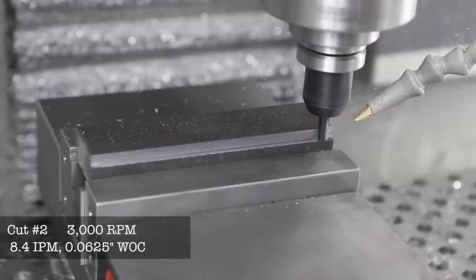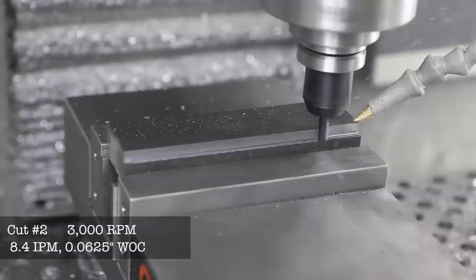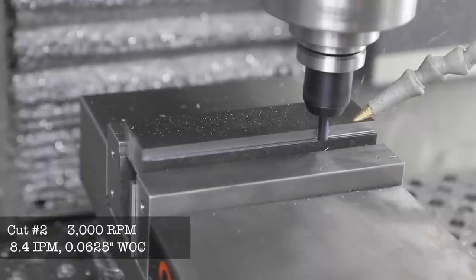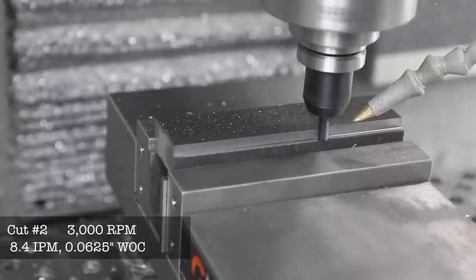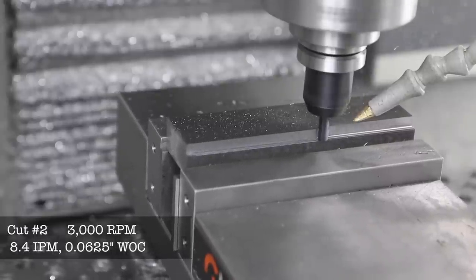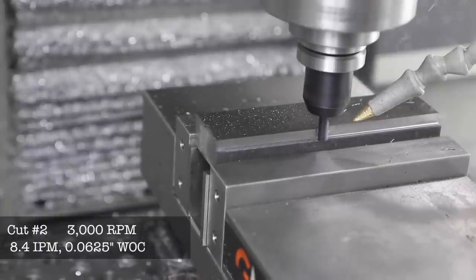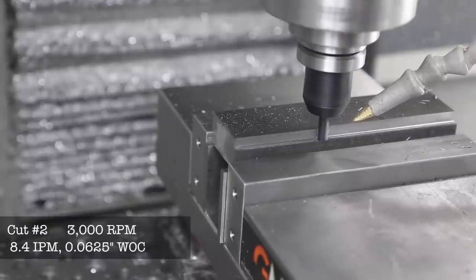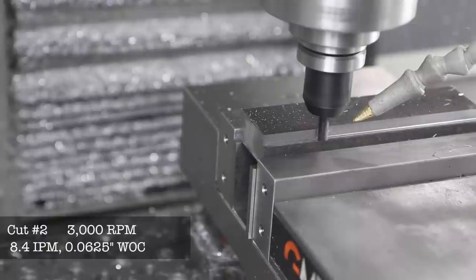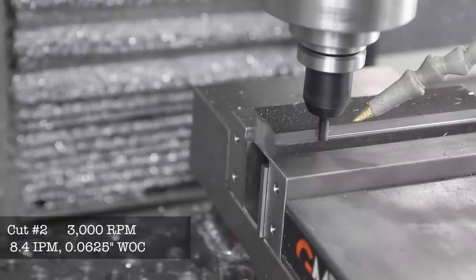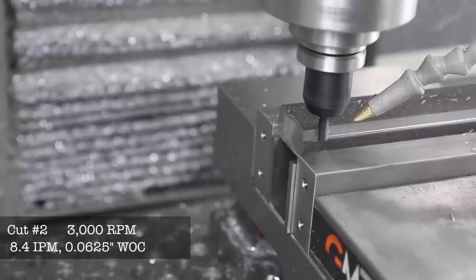Here's cut number two: 8.4 inches a minute, 3000 RPM with a smaller width of cut at 0.0625. Sounds great, it's actually throwing the chip further which is interesting. The chips are pretty warm, I caught a few in my hand. We're going to go through all the detail at the end on horsepower, material removal, chip per tooth, all that good stuff, plus links to the exact cutters we're using.